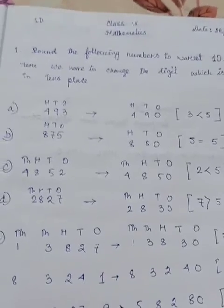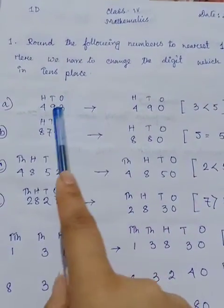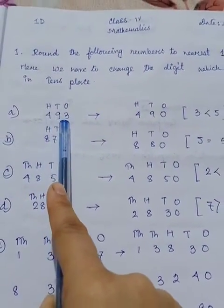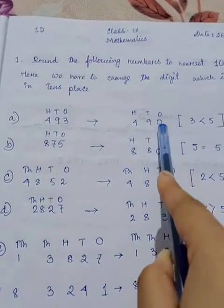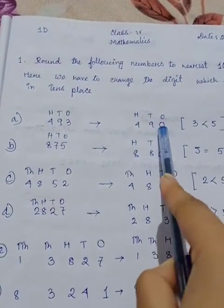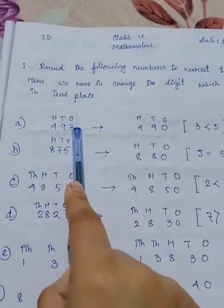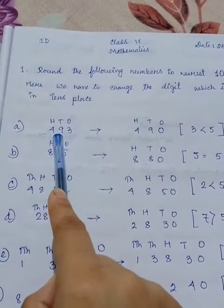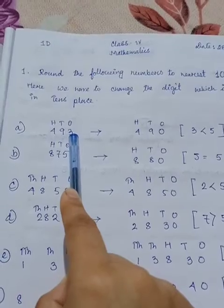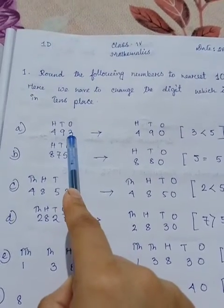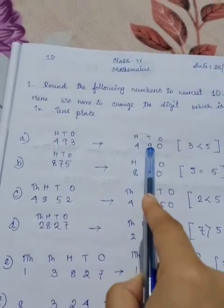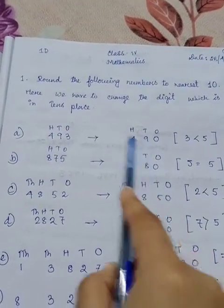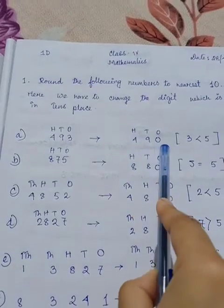Let's see 493. At first we write zero in one's place. There is three. Three is less than five, so in tens place no changes. So 493 is nearest to 490.